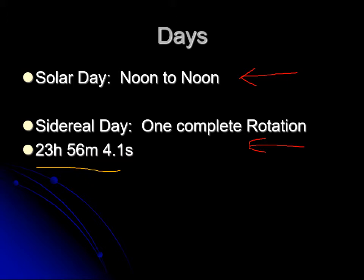So the day you think of as a day is slightly more than one rotation. The stars repeat every time the Earth rotates, so the stars repeat every 23 hours, 56 minutes, and 4 seconds. That means stars look like they rise four minutes earlier every day.